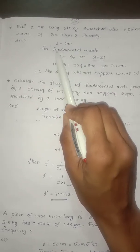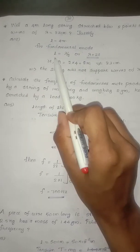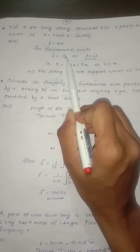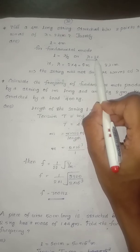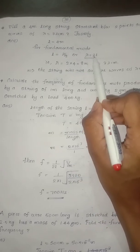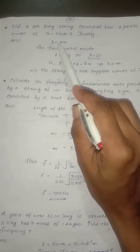In the fundamental mode, length is equal to lambda by 2. Half of the wave is equal to double of the length. L = λ/2 and λ = 2L.